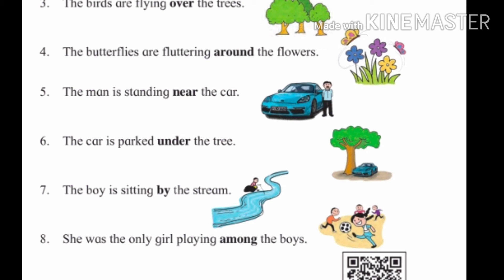The car is parked under the tree. Kar hi zhada khali park keli ahe. Under means cha khali. The boy is sitting by the stream. Ek mulga paane cha prawaha cha zhawal basla ahe — stream means paane cha prawaha.